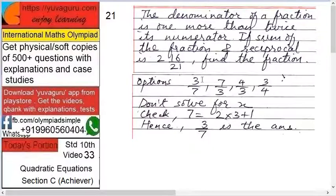The options given are 3 by 7, 7 by 3, 4 by 3, and 3 by 4. Now, see here, our first instinct is to let the numerator be x, denominator be 2x plus 1. But don't go for x. There is a simpler way.